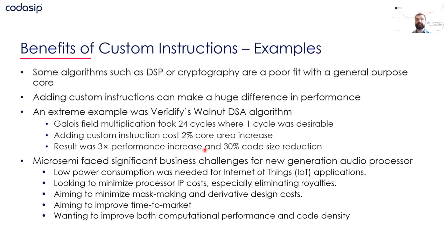To give more precise examples, let me mention two use cases from our partners and customers, focused on DSP and cryptography — fields where general-purpose processors are not the best choice because performance isn't sufficient. The first example is Verify, a cryptography case. They have a DSA algorithm that performs finite field multiplication. Using the standard extensions, it takes about four cycles to do the multiplication, which is a key bottleneck in the algorithm.